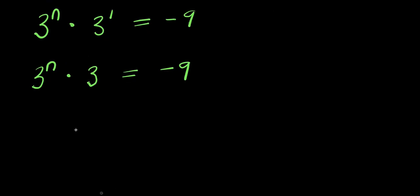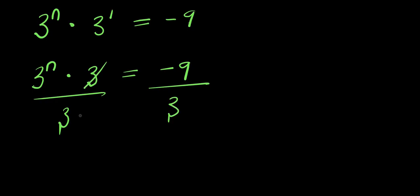I can decide to divide this by 3, and divide this by 3. The 3 eliminates the 3, leaving 3 to the power of n equals negative 9 divided by 3, which is negative 3.